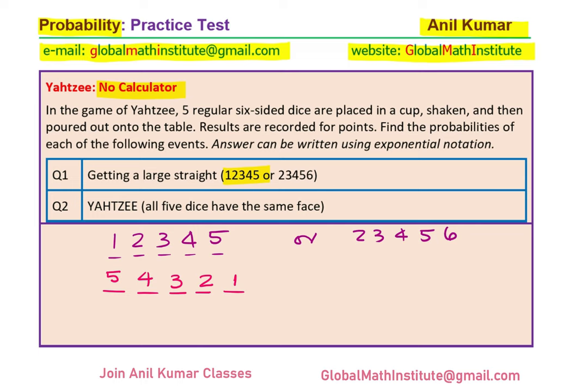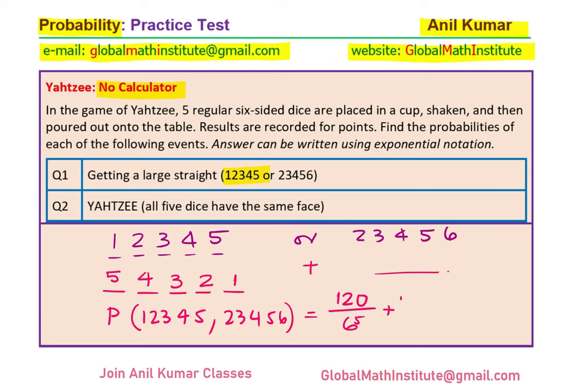The total number of cases is 6 to the power of 5. Since there are two options — 1, 2, 3, 4, 5 or 2, 3, 4, 5, 6 — we add them up. So the probability can be written as 120 over 6 to the power of 5 plus 120 over 6 to the power of 5, which equals 240 over 6 to the power of 5. And that is how we write this particular answer.